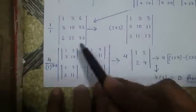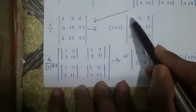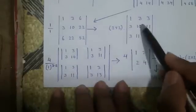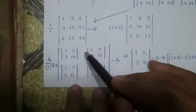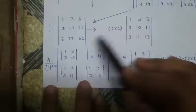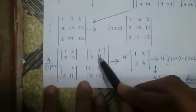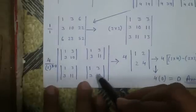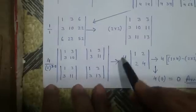So, again we will continue the same process but this time, this 4 will be above. Divide by the first element that is 1, order of the matrix is 3, minus 2. Again, finding the minors, 10 minus 9 is 1, 11 minus 9 is 2, 11 minus 9 is 2 and 13 minus 9 is 4. And 4 divided by 1 to the power 1 is 1, that is 4.